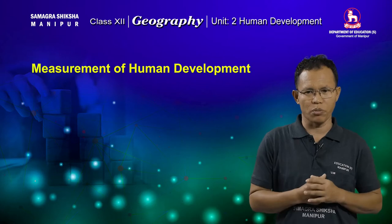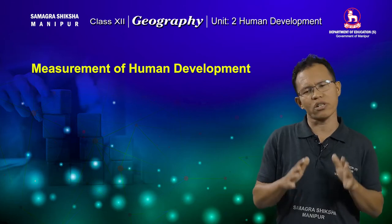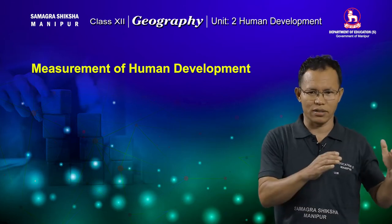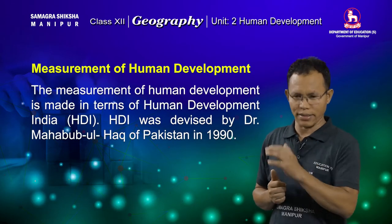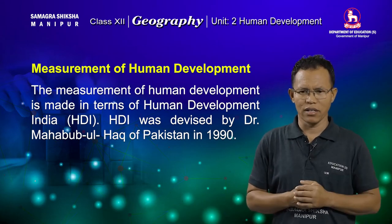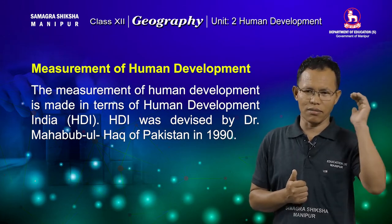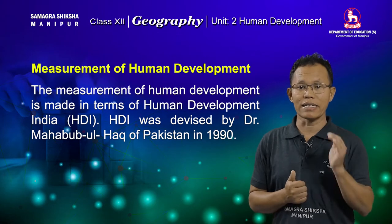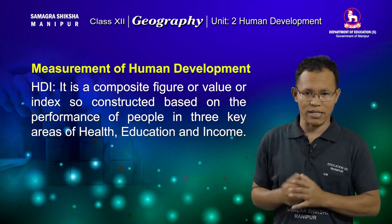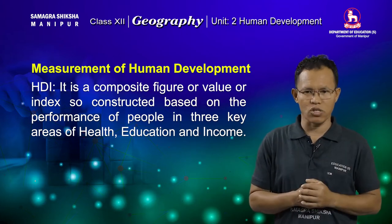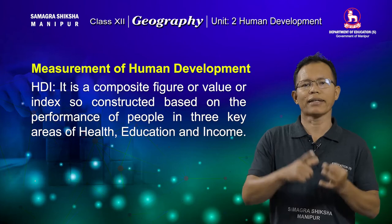Next, we come to the measurement of human development. The level or status of human development is not the same everywhere, but we can measure it through a concept called the Human Development Index. The term Human Development Index was first devised by Dr. Mahbub Al-Haq of Pakistan in 1990. It is a composite index constructed based on the performance or achievements of the people in three key areas: health, education, and income.